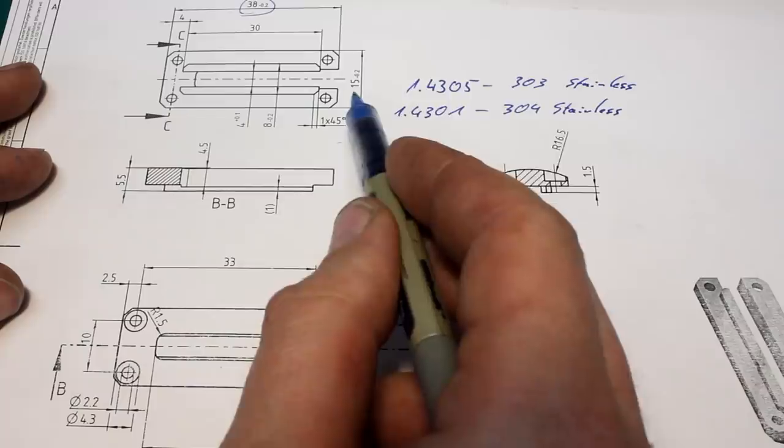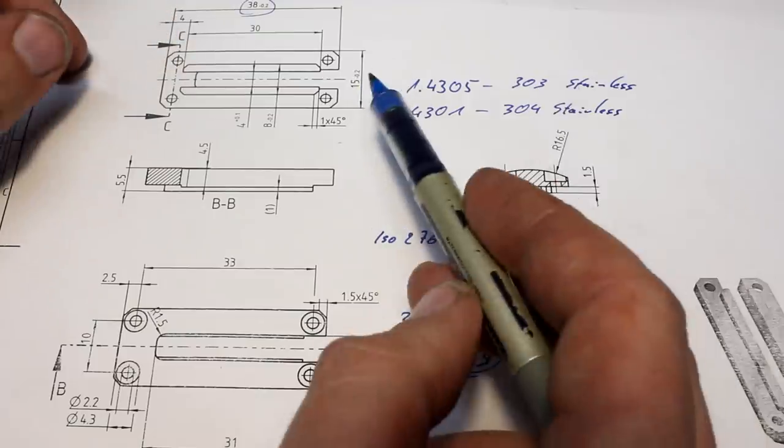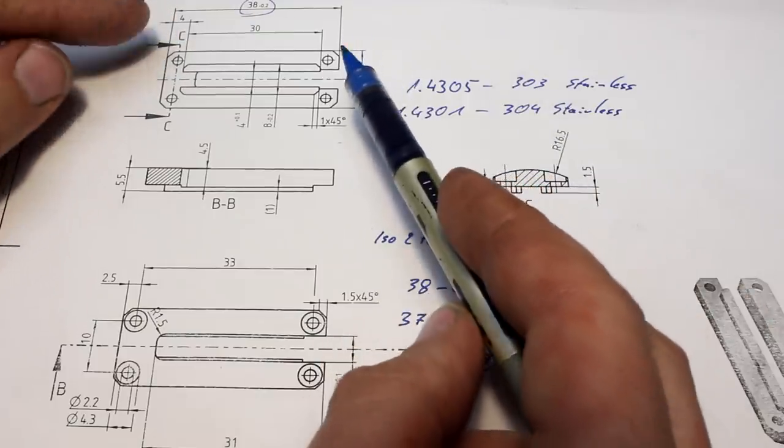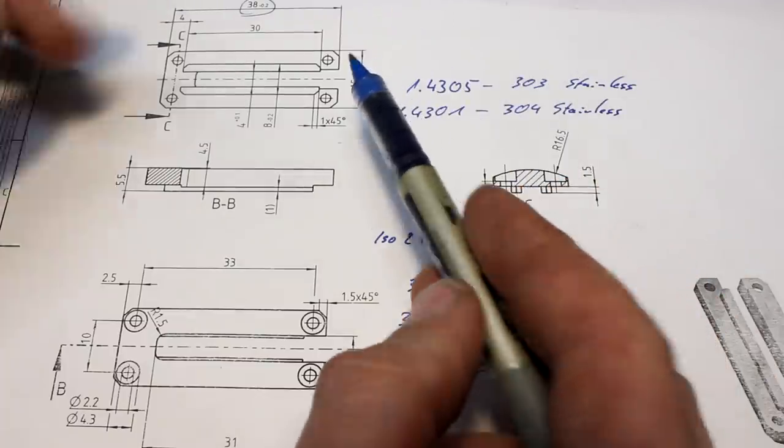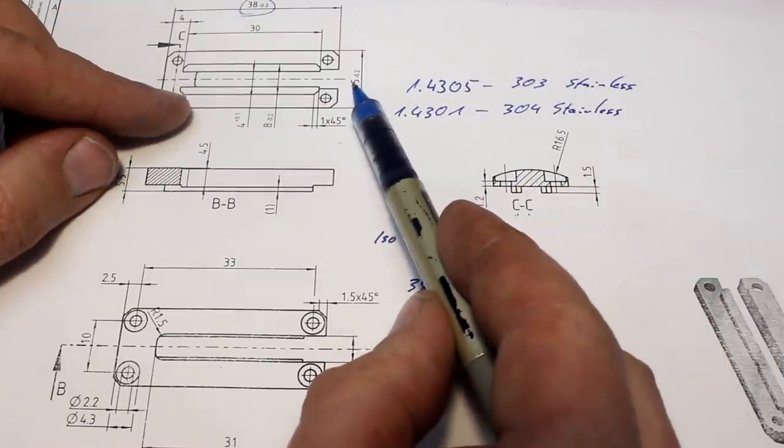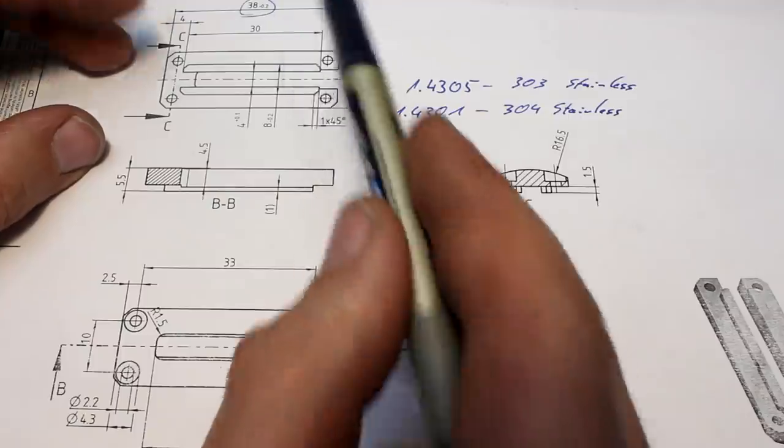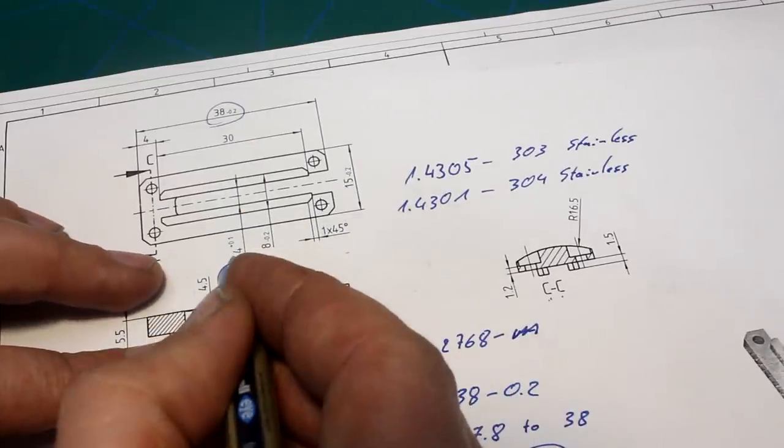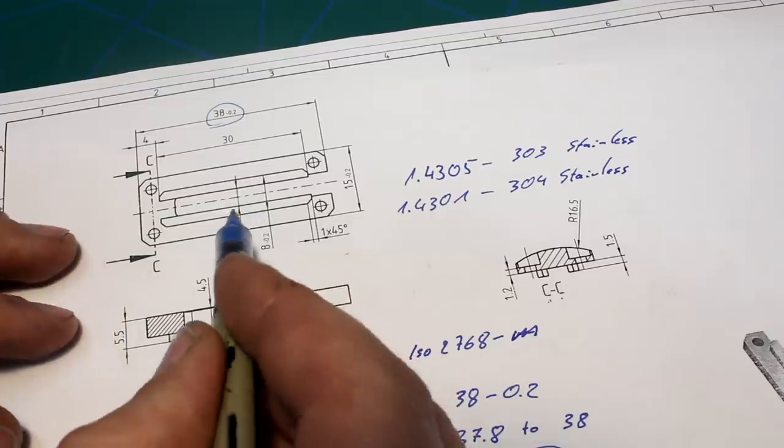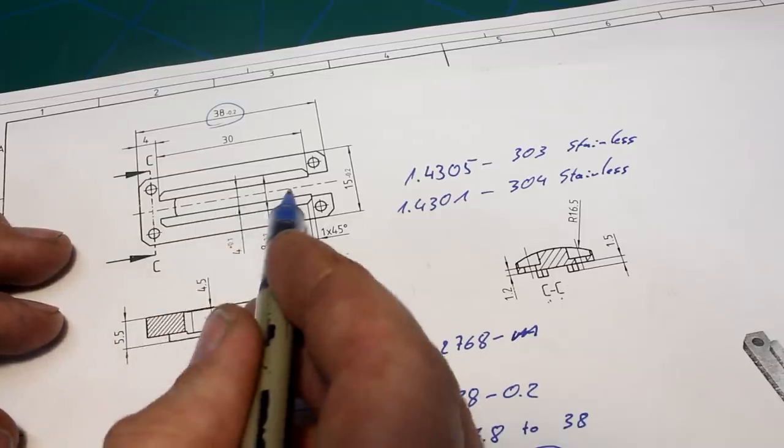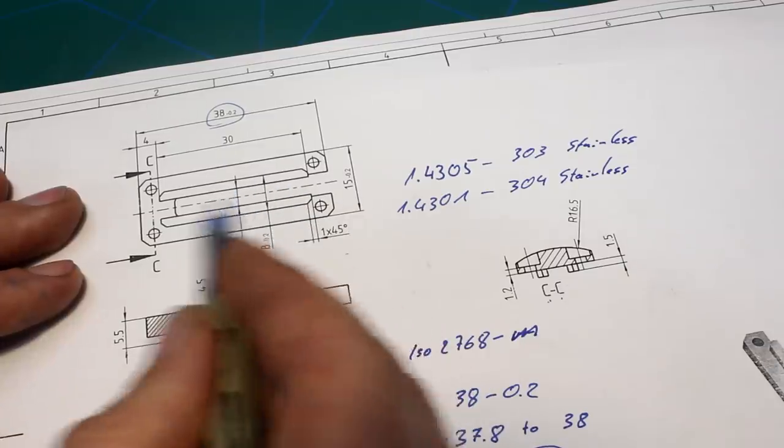Same for the width here, 15 minus 0.2. Looking at this makes me already know that this needs to fit in a cutout. Because the dimensions, the outside dimensions minus. Here we have a slot. Nominal width is 4mm plus 0.1. That tells me that there probably needs something to fit between those two sides of the slot. Something will be sliding in.